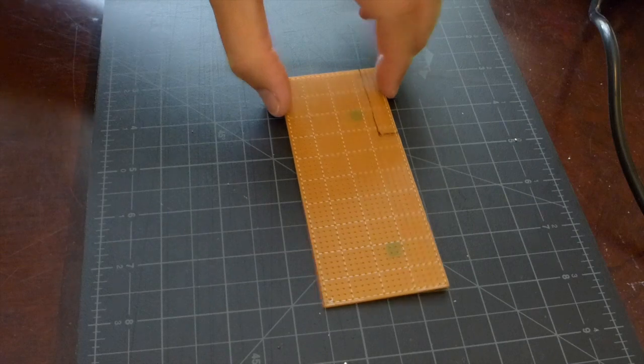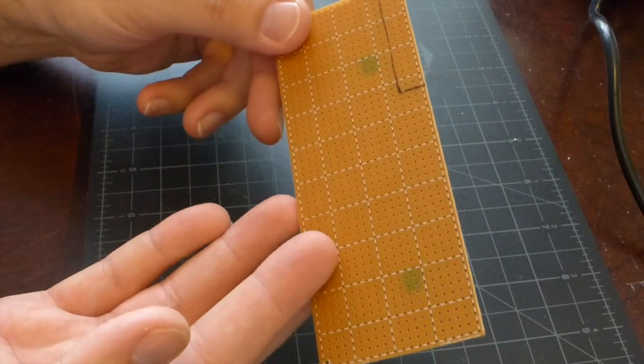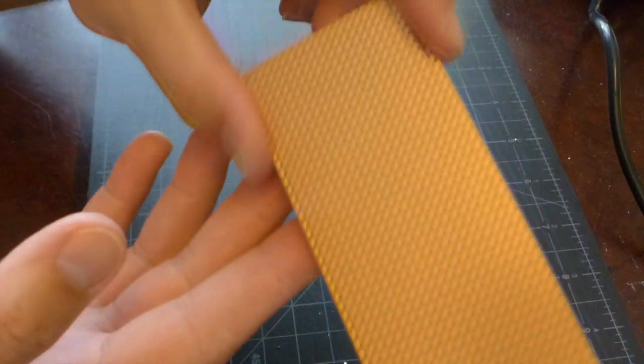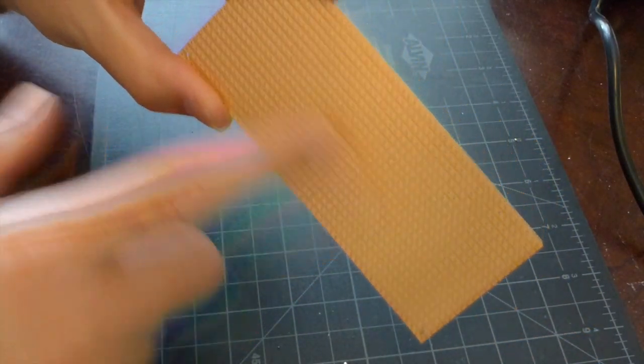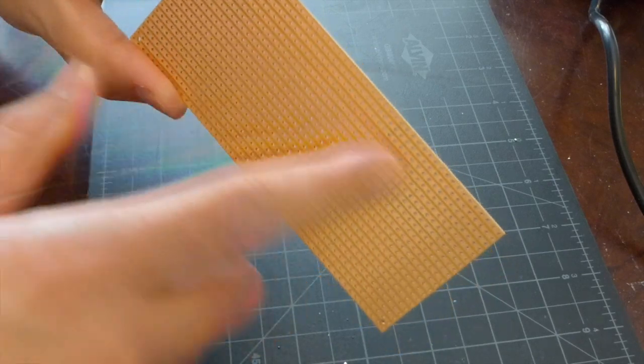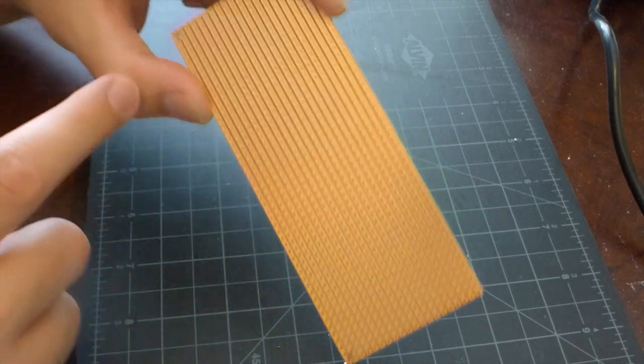For this project I'm using stripboard, which is a prototyping board for making circuits. On the back are copper strips that run on a line in each row, so each row is completely connected. You can use this to create different types of circuits.